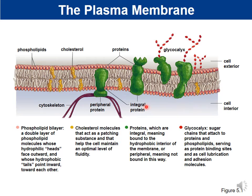The next component is proteins. Erythrocytes have about 50 different types of proteins embedded in the membrane. Some proteins are integral proteins, actually embedded in the membrane; others are peripheral proteins, just associated with the membrane. The last component is the glycocalyx — sugars that attach to proteins or phospholipids, serving as binding sites, cell lubrication, adhesion molecules, and helping with cell-cell recognition.